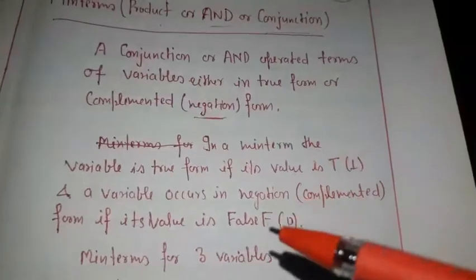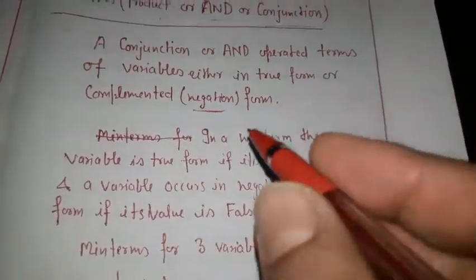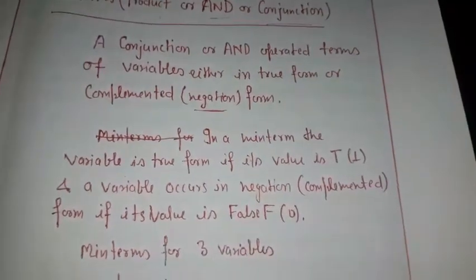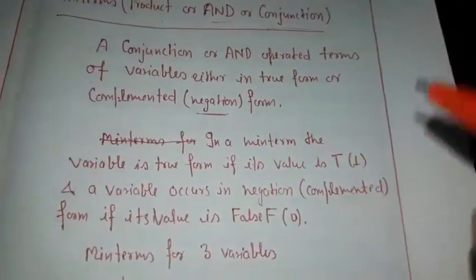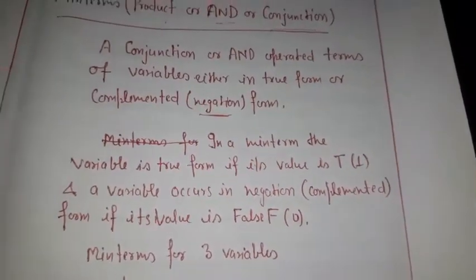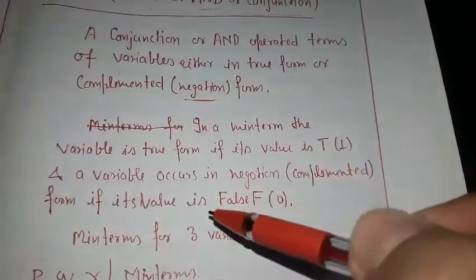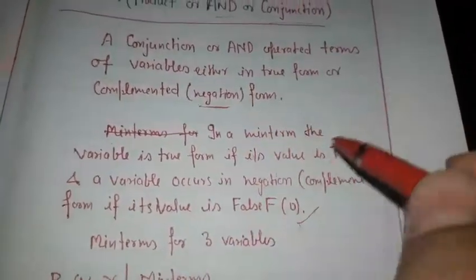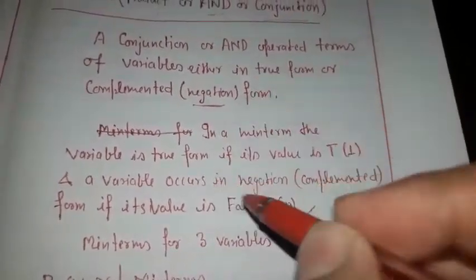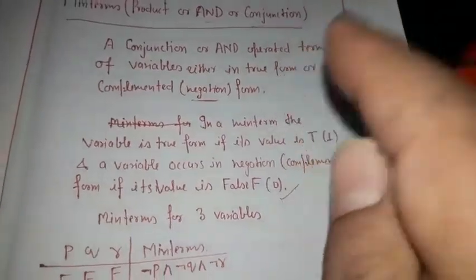In any min term, a variable appears in its true (normal) form — that is, without negation — if its truth value is true (1). A variable appears in its complemented form — that is, with negation — if its truth value is false (0). So for any input combination of variables, the min term is derived accordingly.